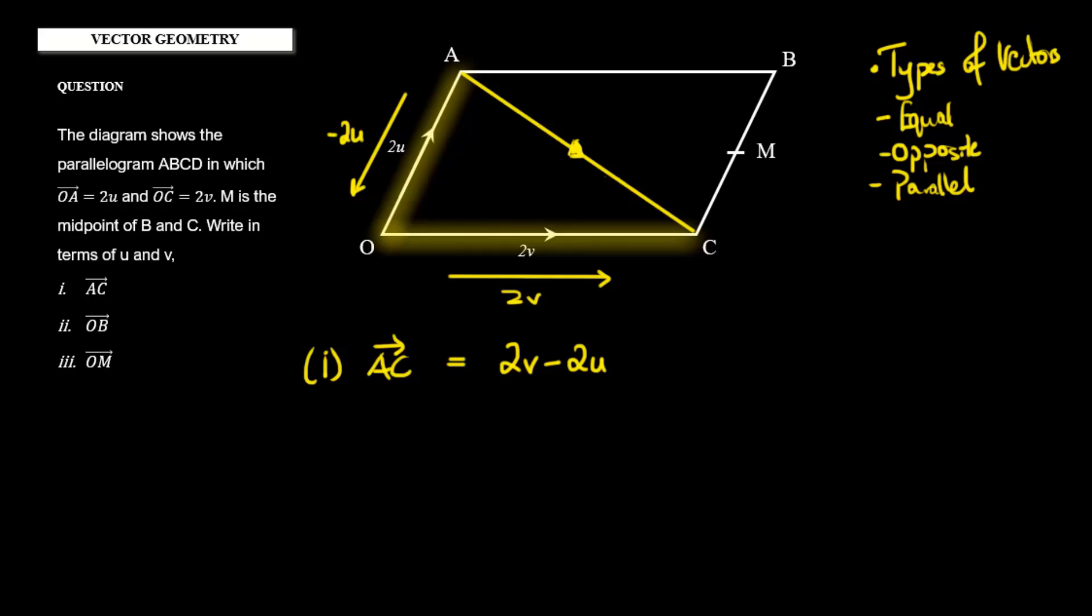The next one we want to figure out—let me use a different color—is vector OB. Can you identify where vector OB is? Well, it means that we're going from O to B, so it's going to go from here all the way over to here. So that's this vector right here, OB. Again, we want to move from O to B, so let's travel. We can take any route that we would like.